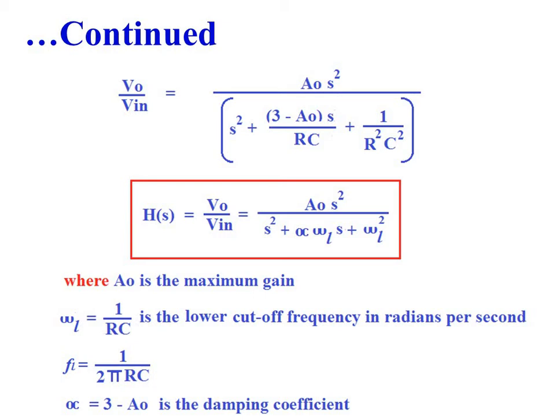So V0/VIN = A0·S² / [S² + (3 − A0)·S/(RC) + 1/(R²C²)].